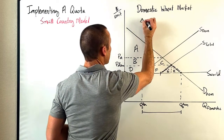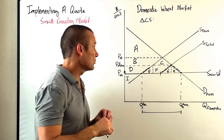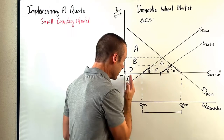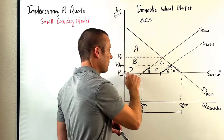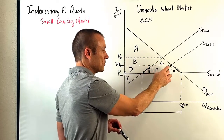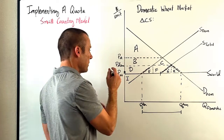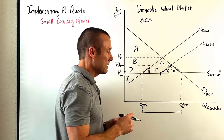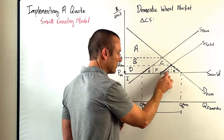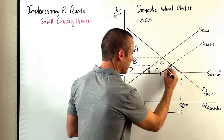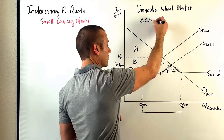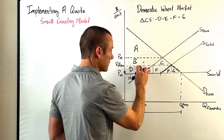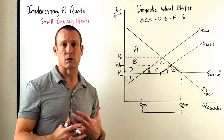Let's start with the change in domestic consumer surplus. In free trade, the domestic consumer was getting a large triangle — the entire area A, B, C, D, E, F, G, H. With the quota in place, the domestic price has gone up, so consumers are only getting A, B, and C. They're losing D, E, F, and G. Consumers are basically always hurt by these trade restrictions.